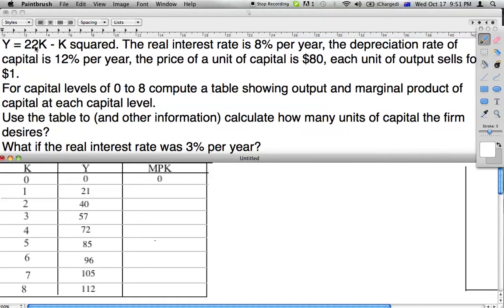We are given the formula for calculating Y: Y equals 22 times K minus K squared. You can type this in your calculator and figure it out for each level of K, how much output will be produced for each machine added or bought.